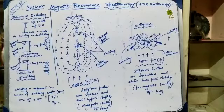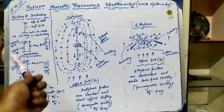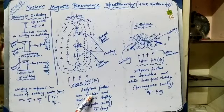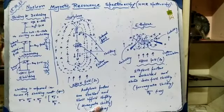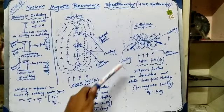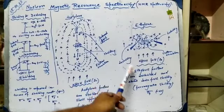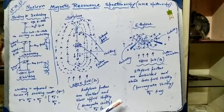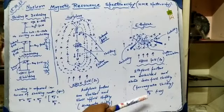Shielded protons come into resonance at a greater amount of applied field, whereas deshielded protons come into resonance at a lesser amount of applied field. Acetylenic protons are shielded and show upfield shifting — this is also called diamagnetic shielding, or σd, which is a positive parameter. Ethylenic protons are deshielded and show downfield shifting, also called paramagnetic shifting, denoted by σp, which is a negative parameter.